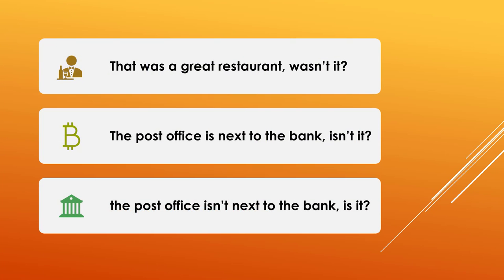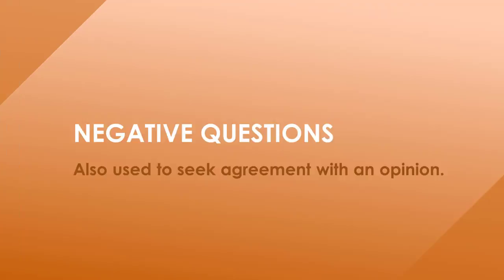That was a great restaurant, wasn't it? The post office is next to the bank, isn't it? Tag questions have falling intonation when the speaker expects the listener to agree. They have rising intonation when the speaker wants to express uncertainty. Negative questions are also used to seek agreement with an opinion.